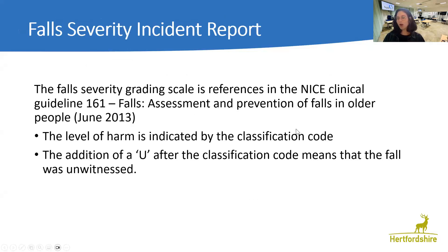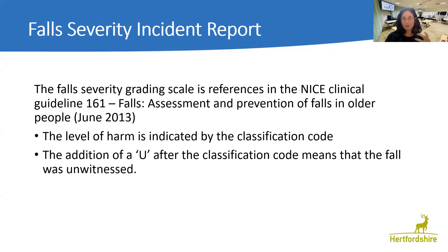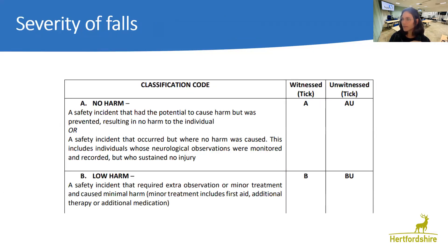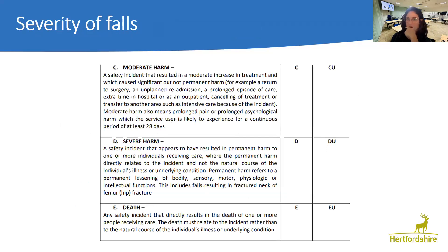The falls severity form is referenced in the NICE guidance for falls assessment and prevention of falls in older people. The level of harm is indicated by the classification code, and we can see whether it was witnessed or unwitnessed. The grading goes from no harm and low harm, through to moderate and severe, with guidance provided on how to distinguish between them.